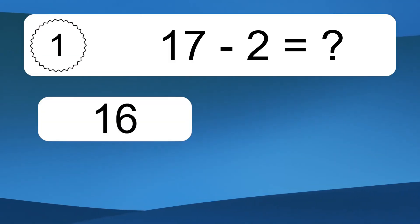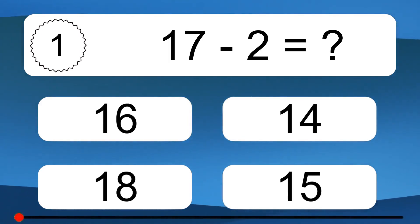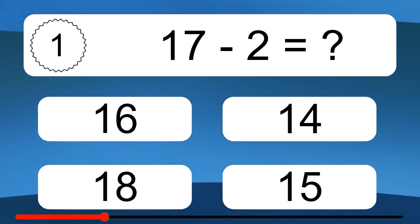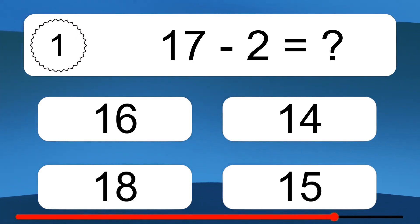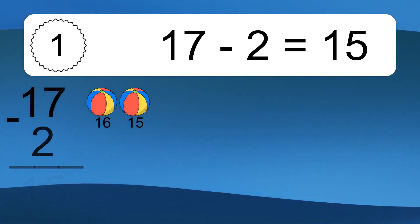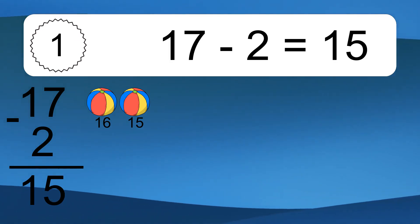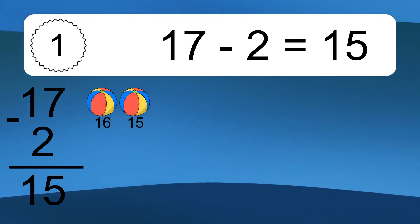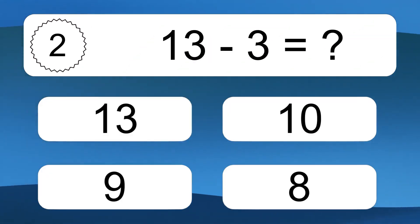17 minus 2 equals what? 17 minus 2 equals 15. Let's count it: 16, 15.